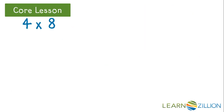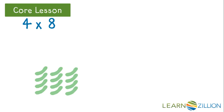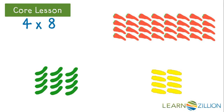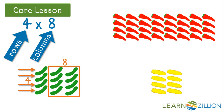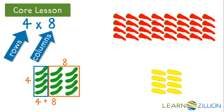What would the array look like for four times eight? Here are three arrays — let's decide which one matches that expression. Four times eight means four rows of eight columns. The array of cucumbers shows four rows, but then a group of eight more, not eight columns. This is four plus eight, or twelve cucumbers total. It does not match four times eight.